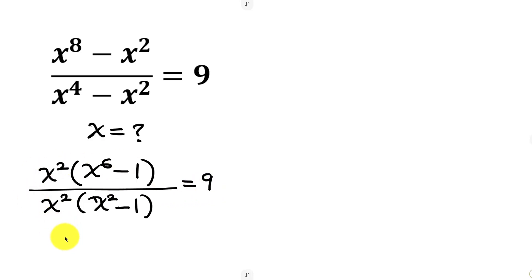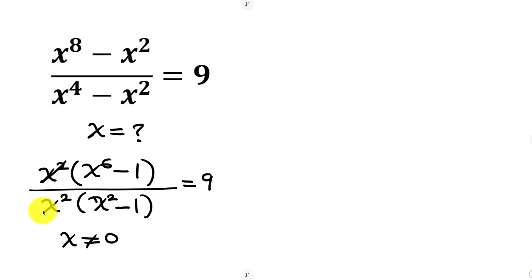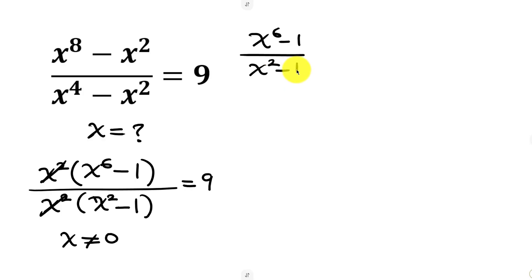This expression on the left is only possible when x is not equal to 0, and if x is not equal to 0, that means x squared can cancel out x squared, leaving behind x to the power of 6 minus 1, all over x squared minus 1, equal to 9.